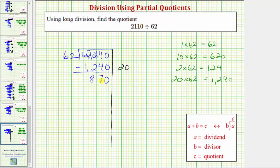Now we repeat the process. We want to determine a certain number of 62's that we know for sure are in 870. Looking back at our products, notice how because 620 is less than 870, and 620 is equal to 10 times 62, there must be at least 10 62's in 870. So let's use 10 as our next partial quotient. Now we multiply by the divisor. 10 times 62 is 620. And we subtract.